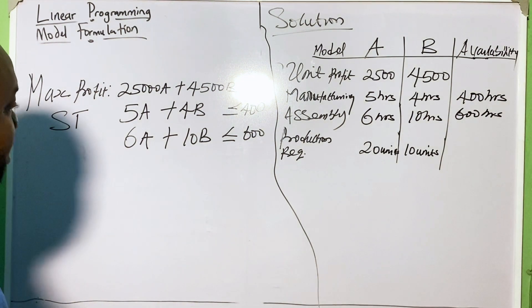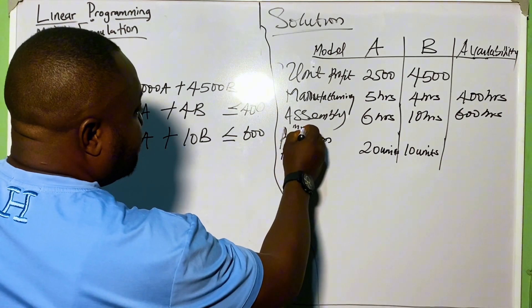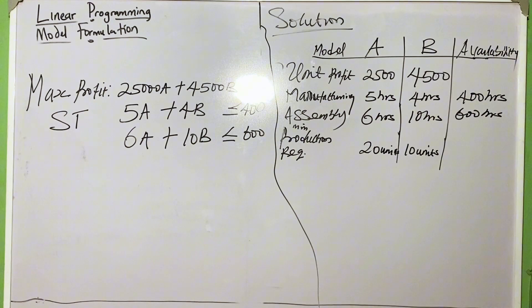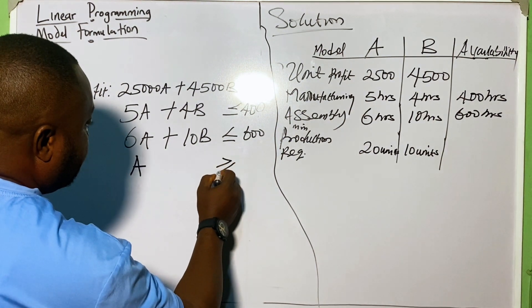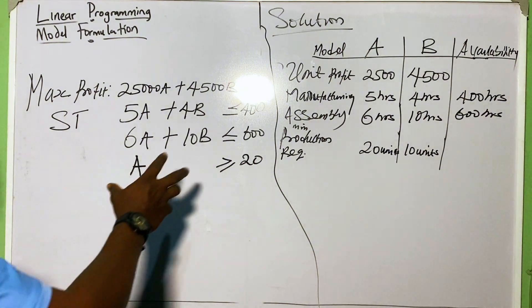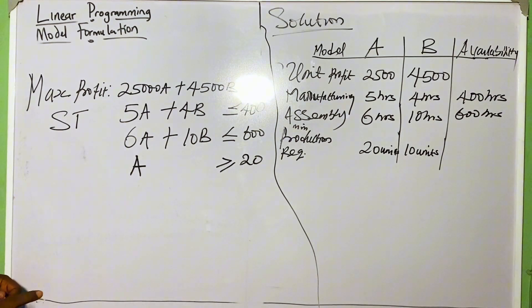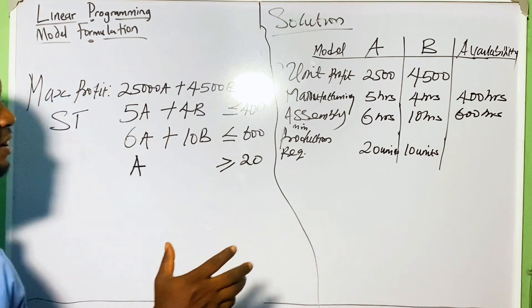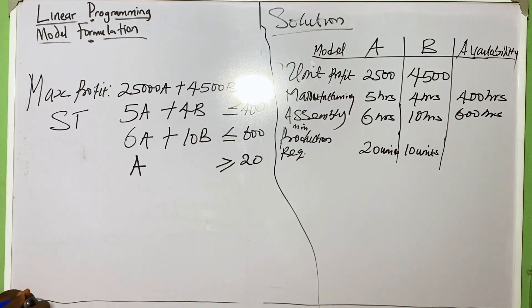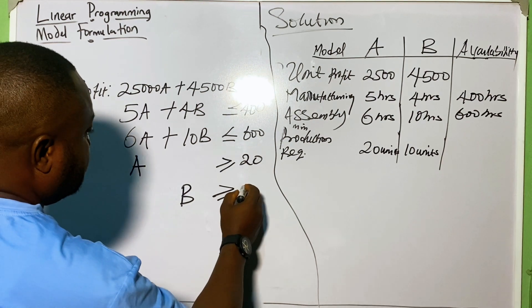The next is our production requirement constraint. The minimum production requirement is 20 units for model A and 10 units for model B. So for A: A ≥ 20, because it says minimum requirement — the model will not accept production of anything less than 20 units. And for B: B ≥ 10, meaning it will not accept production of less than 10 units.